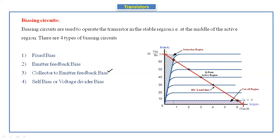The output characteristics have three regions: the saturation region, the cutoff region, and the active region. For the stable operating point, the transistor should always operate at the middle of the active region. However, because of some reasons, this operating point shifts upwards or downwards. If it shifts from the middle of the active region, the transistor will be in an unstable position. To make it stable, we use biasing circuits.